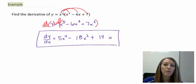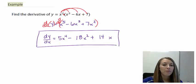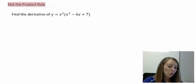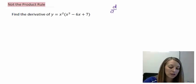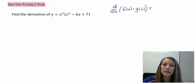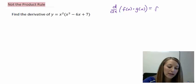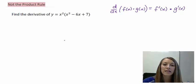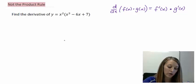That works for this example, but it will not work for all examples — hence we need to learn the product rule. Before I get to the product rule, let me tell you what isn't the product rule, because this is a frequent mistake students make. Students think that if you're taking the derivative of two functions multiplied together, say f(x) times g(x), you can just take the derivative of the first and multiply it by the derivative of the second, like the sum rule.